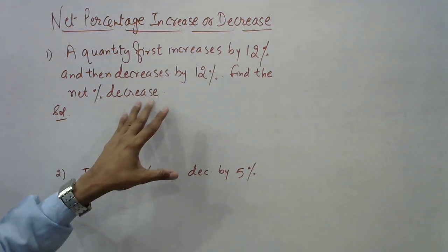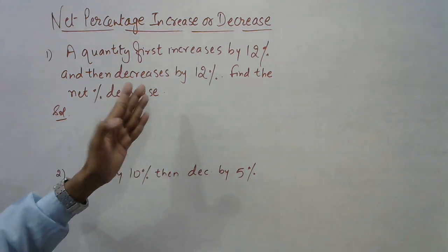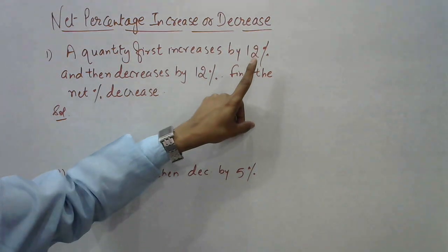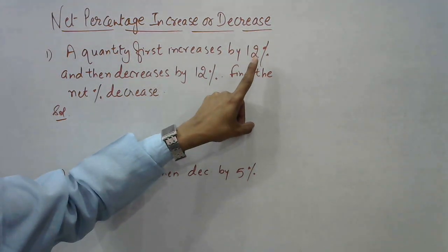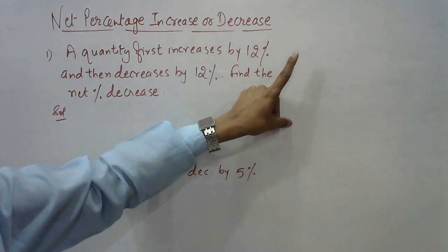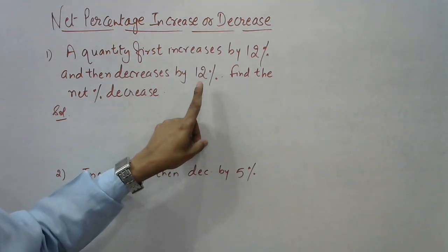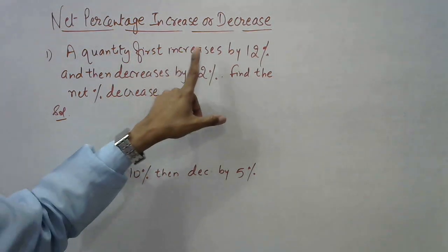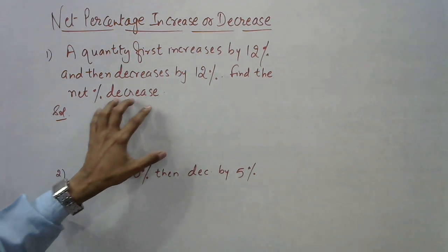First thing is there will be net percentage decrease only, not increase, because it is first increasing so the new quantity will be greater, on which this decrease of 12% will be calculated. So the decrease will be greater than the increase, therefore there is net percentage decrease.